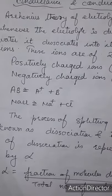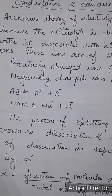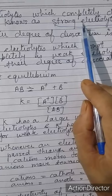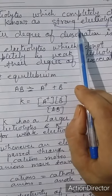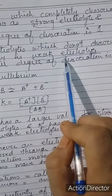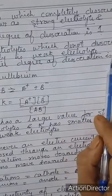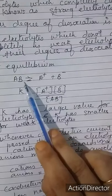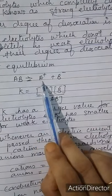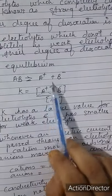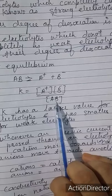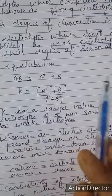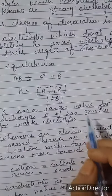Alpha is the fraction of molecules which are dissociated upon the total number of molecules. Electrolytes which completely dissociate are known as strong electrolytes; they have a degree of dissociation equal to one. Weak electrolytes do not dissociate completely and their degree of dissociation is less than one. At equilibrium, AB dissociates into A+ and B−, and the dissociation constant K is given by the concentration of the products upon the reactant. K has a larger value for strong electrolytes and a smaller value for weak electrolytes.